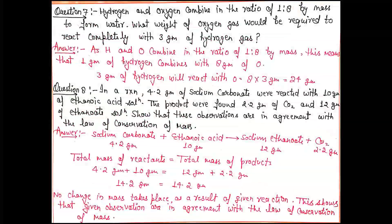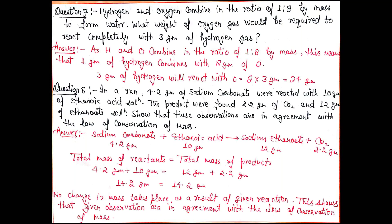Question 7: Hydrogen and oxygen combine in the ratio of 1:8 by mass to form water. What weight of oxygen gas would be required to react completely with 3 grams of hydrogen gas? Since hydrogen and oxygen combine in 1:8 mass ratio, this means 1 gram of hydrogen needs 8 grams of oxygen. So 3 grams of hydrogen will need 24 grams of oxygen.